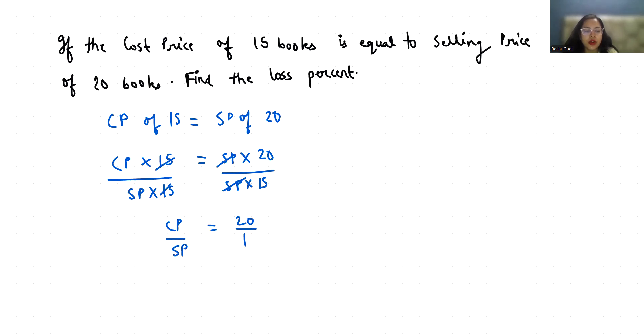If CP is greater than SP, then there is a loss. The formula for loss is CP minus SP. CP is 20 and SP is 15, so there is a loss of 5.